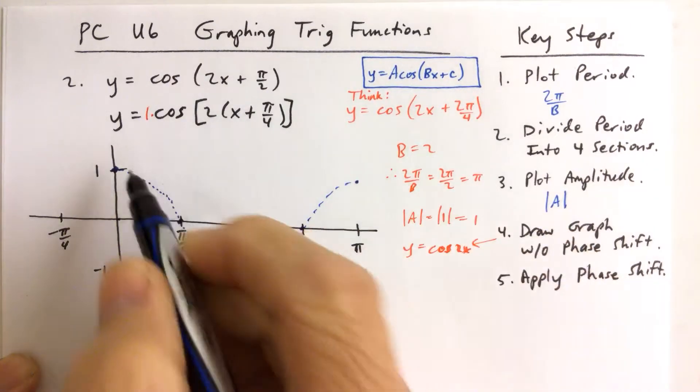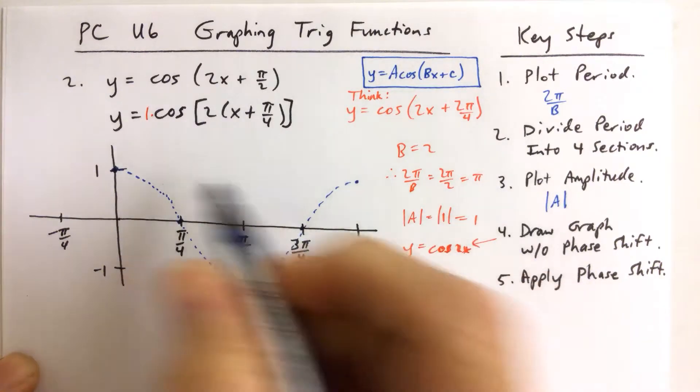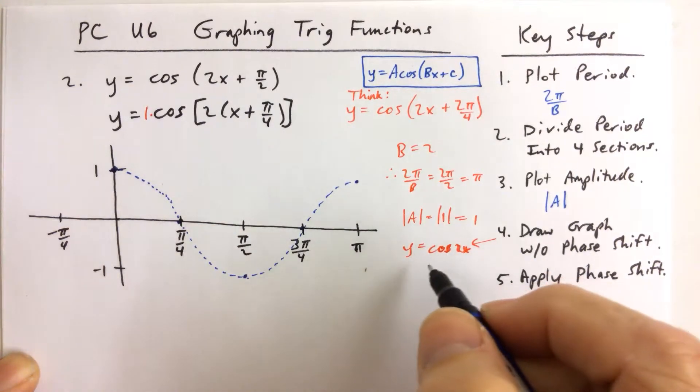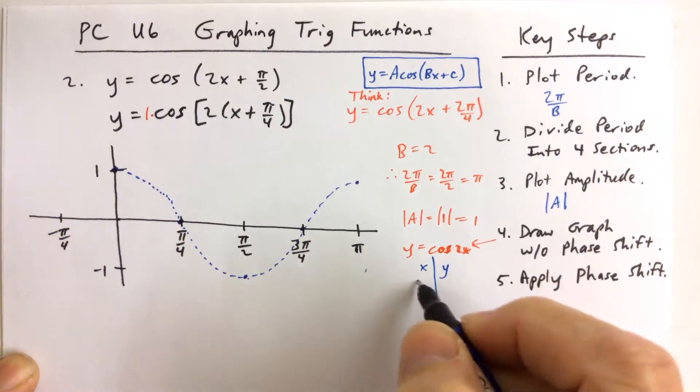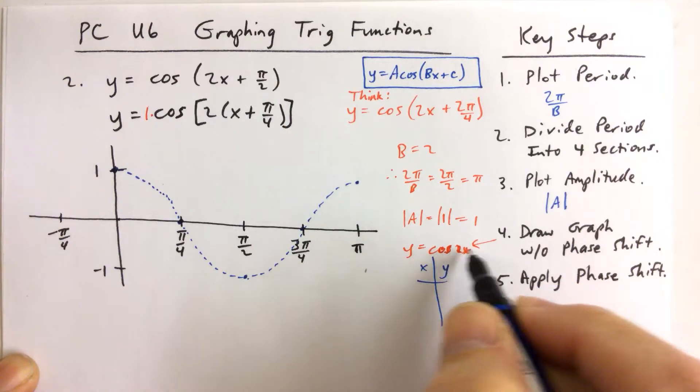Make sure you draw it like a sine curve. Now, why does it look like that? Well, if you don't know why it looks like that, then what you want to do is you want to make an xy chart for the graph without the phase shift, y equals cosine 2x.